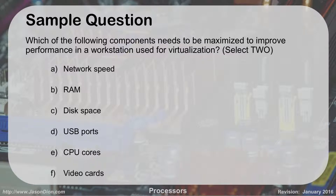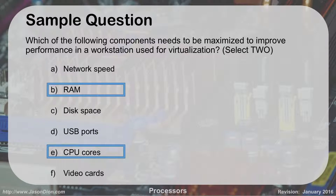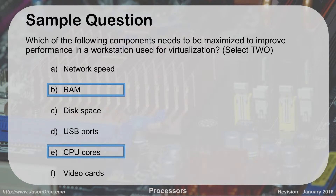So if you want to do virtualization, what are the most important things you need? Select two. The first one is RAM — lots and lots of RAM. And CPU cores — really good processors. It's really important to have lots of RAM and lots of processors because as you build more virtual machines, you're giving each of them a portion of those resources. If you have an eight-core processor, you can run eight virtual machines each getting their own dedicated processor. And lots of RAM gives you the ability to run more machines.